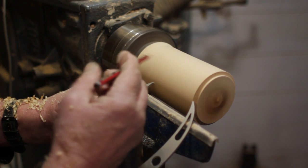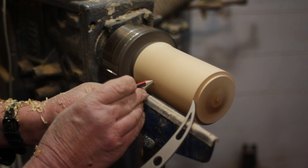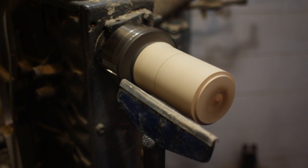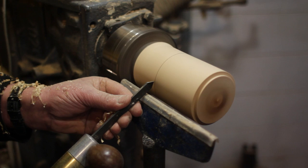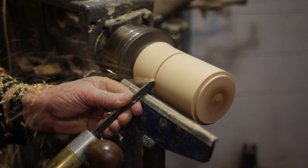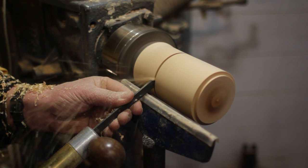Using the caliper set at the diameter we mark off the length of the sphere. And using the parting tool again, making a three-eighths of an inch deep cut, we define that end.